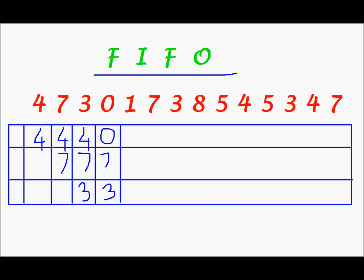Next, I have to bring in 1. And to get in 1, I have to remove one out of 0, 7, and 3. And 7 was the first to enter, so 7 shall be the first to leave. 0 will be where it is, and in place of 7, I shall write 1. And 3 will be where it is.